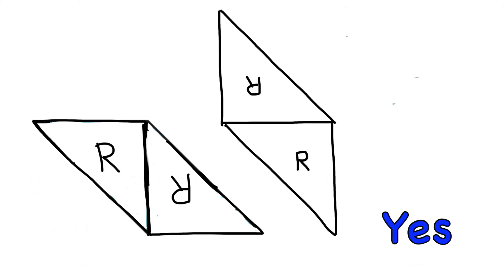The answer is yes. Here's two examples of how I use two copies of triangle R to compose a parallelogram that is not a square.